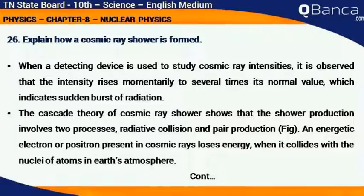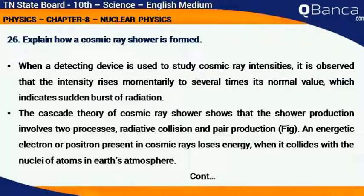The cascade theory of Cosmic Ray Shower shows that the shower production involves two processes: radiative collision and pair production. An energetic electron or positron present in Cosmic Ray loses energy when it collides with the nuclei of atoms in Earth's atmosphere.